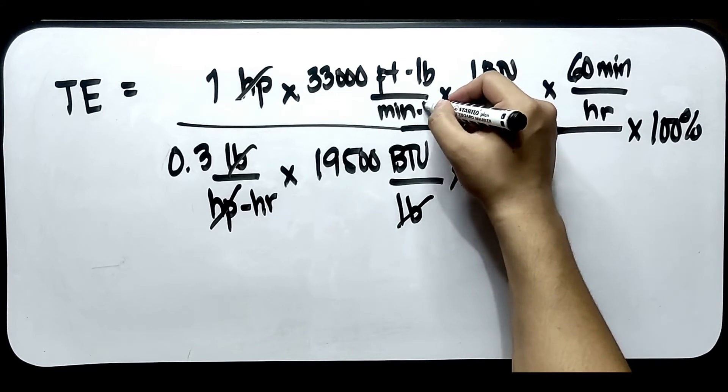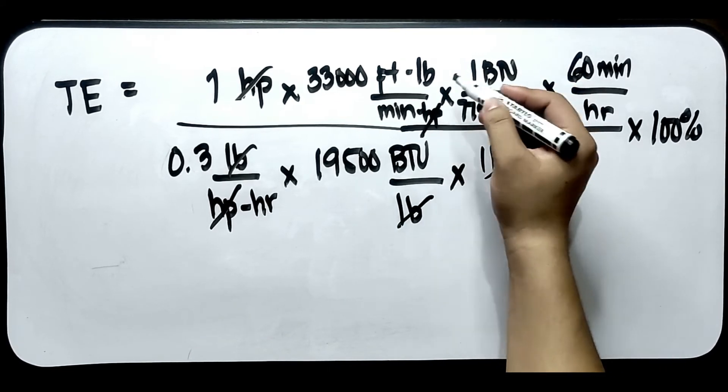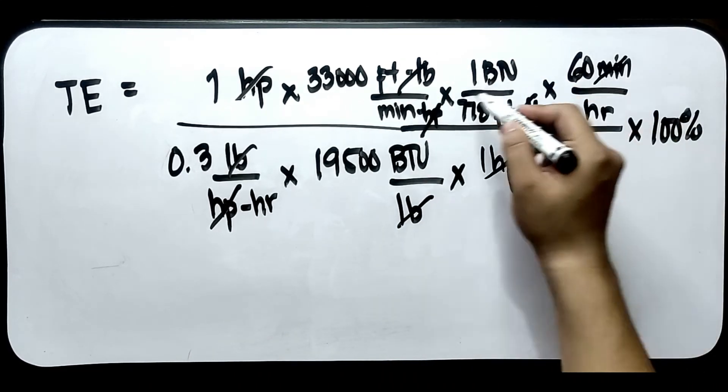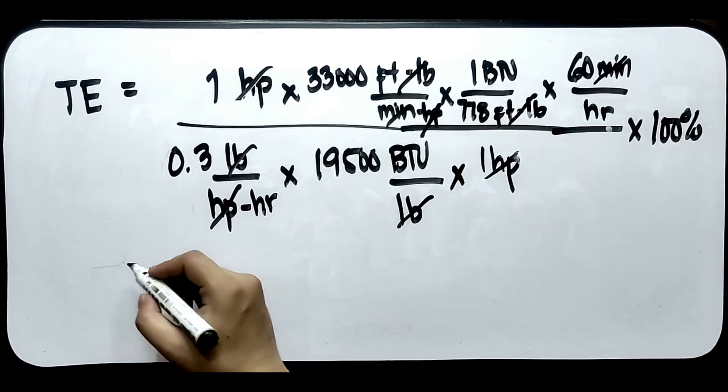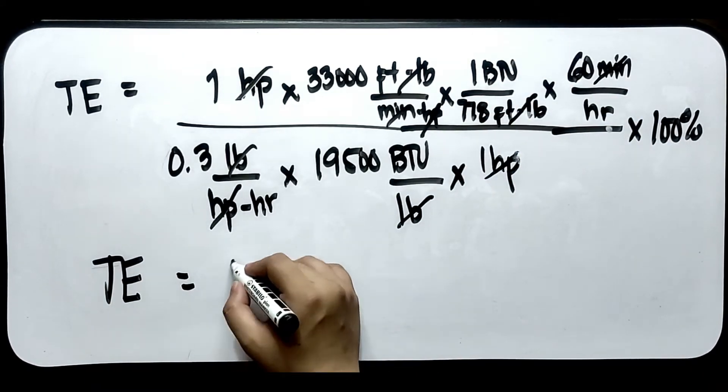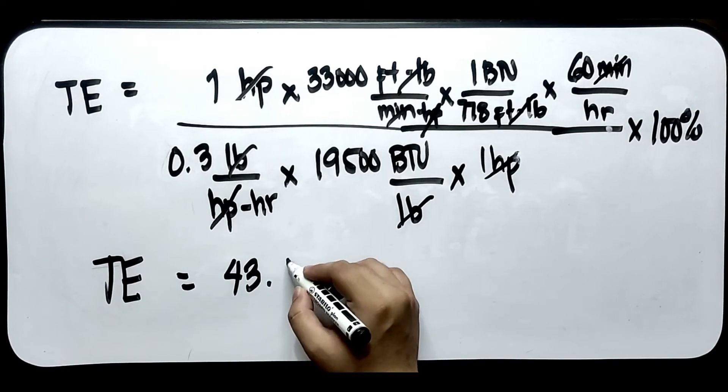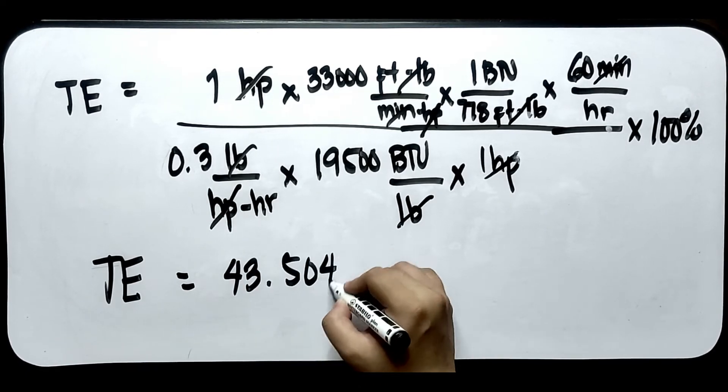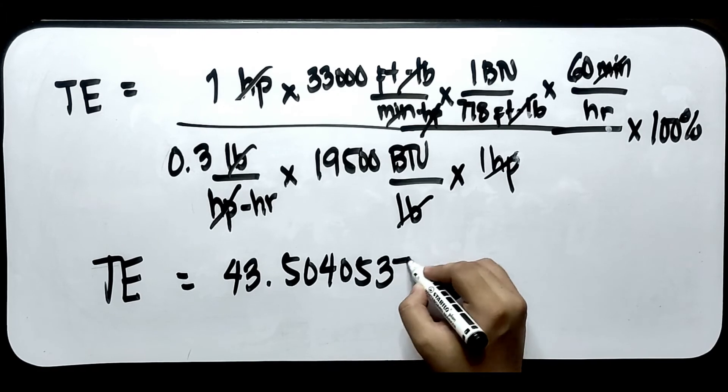Dito, cancel ito. So, may hp pa dapat dito. Foot pound, minute, cancel. So, matitira BTU per hour. Magkukuha natin thermal efficiency ay 43.50405379%.